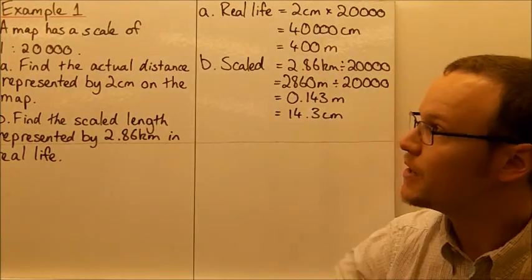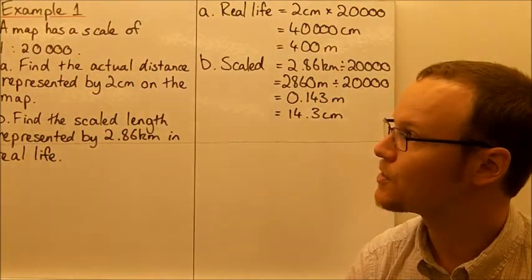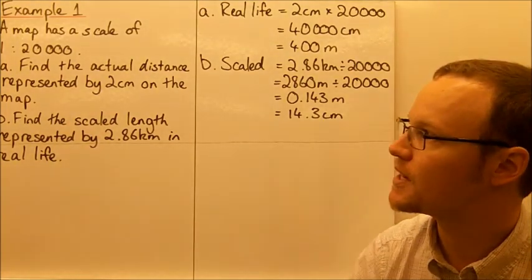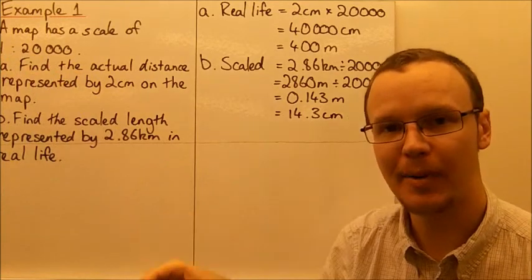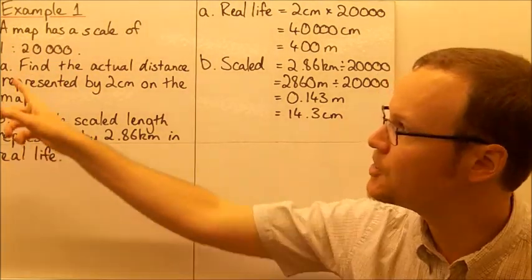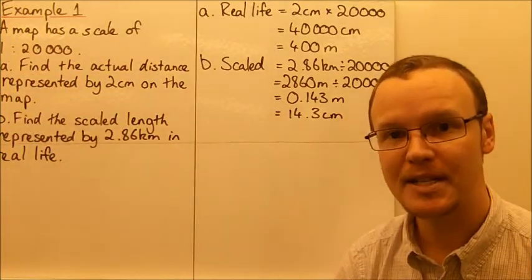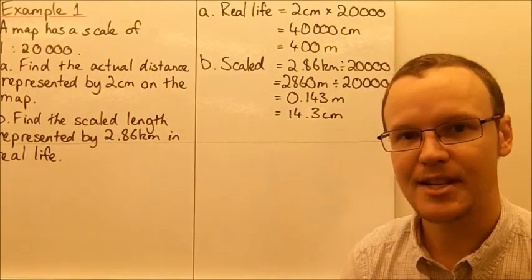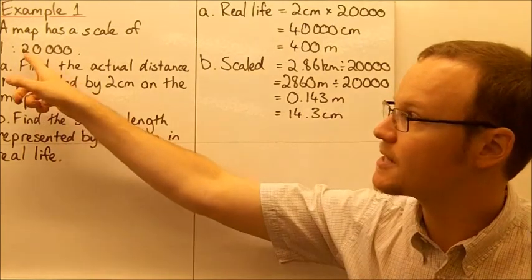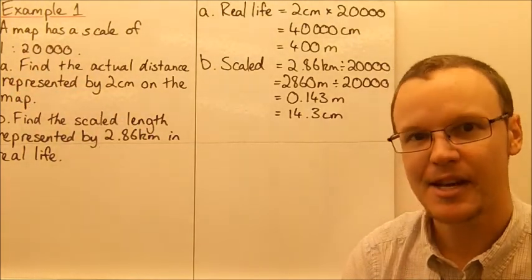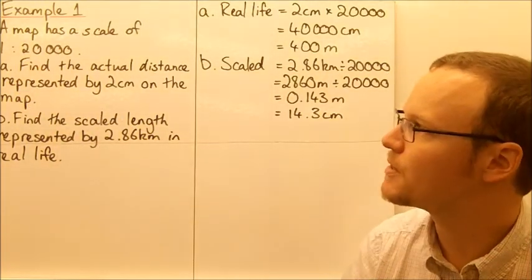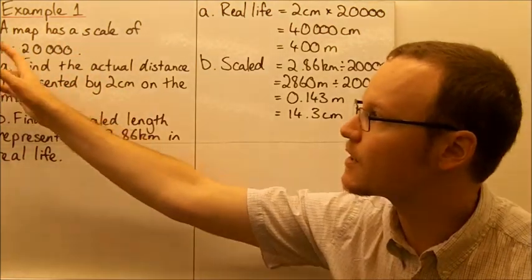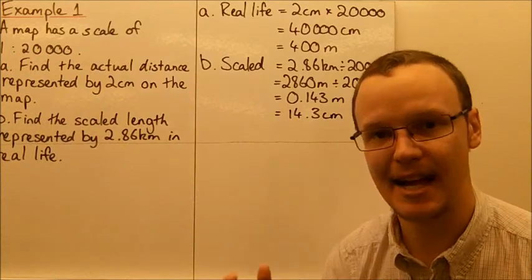Looking at an example: if we've got a map with a scale of 1 to 20,000, that means one unit on the page — say, one centimetre — is equivalent to 20,000 centimetres in real life. Similarly, one metre on the page equals 20,000 metres. You can see the multiplicative effect, which is why no units are needed in the ratio — it works for any units, so long as both sides use the same units.